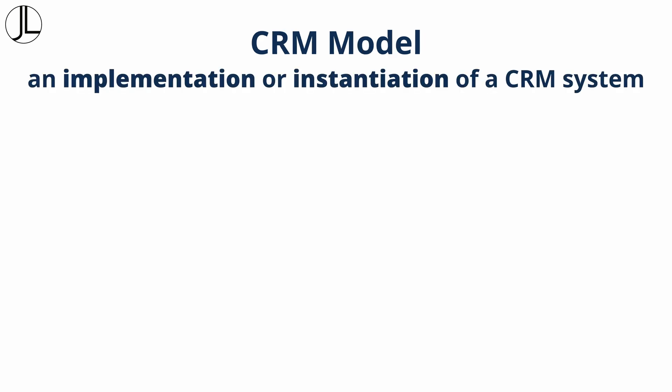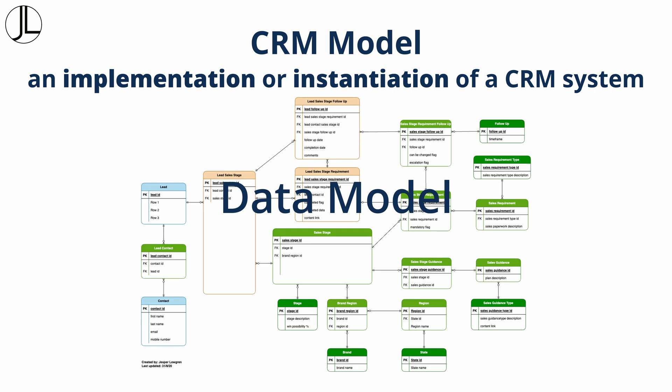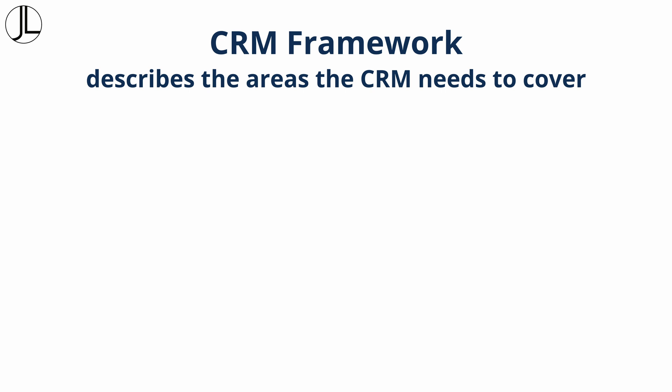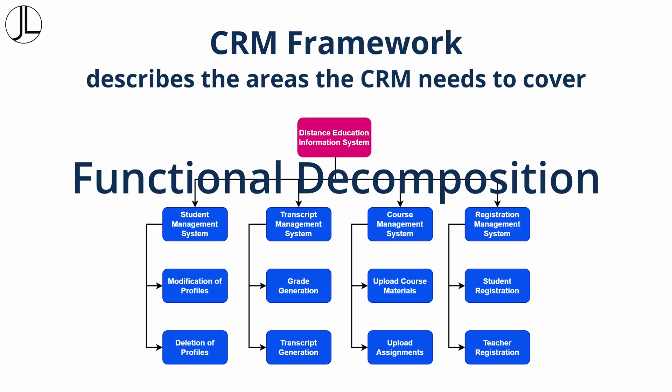A model is an implementation or instantiation of a system. For a CRM, a typical model is a data model, which describes the CRM data and its relationships with other data. A CRM framework could describe the areas a CRM needs to cover, both business and technical — for example, a CRM functional decomposition.